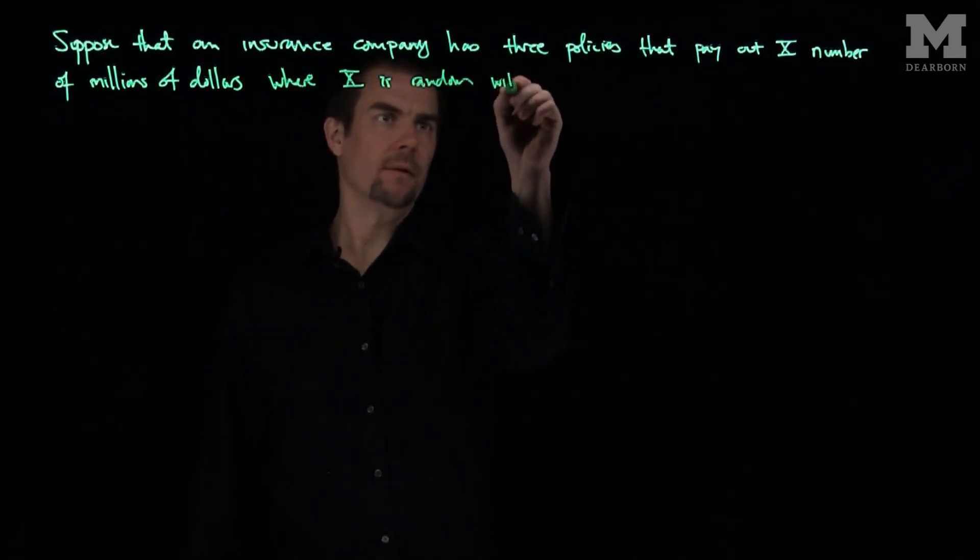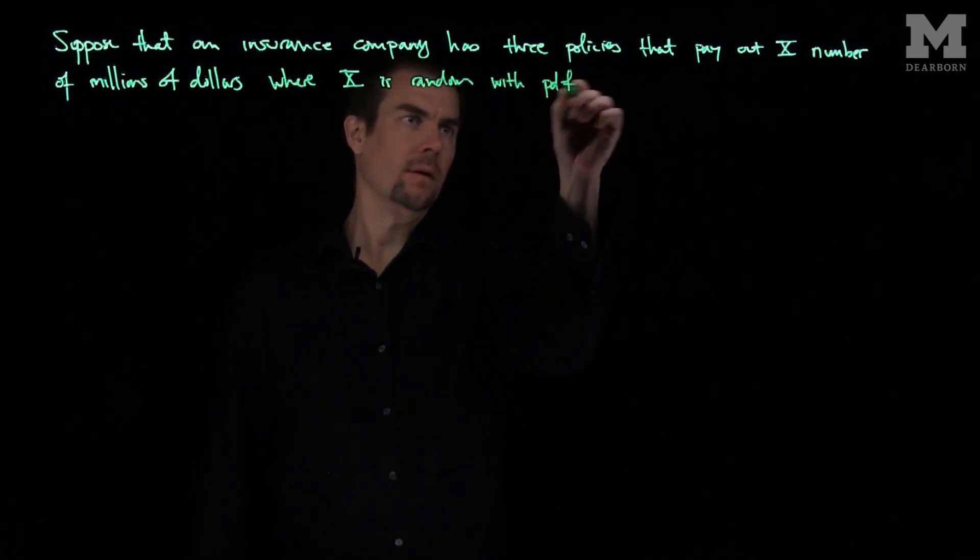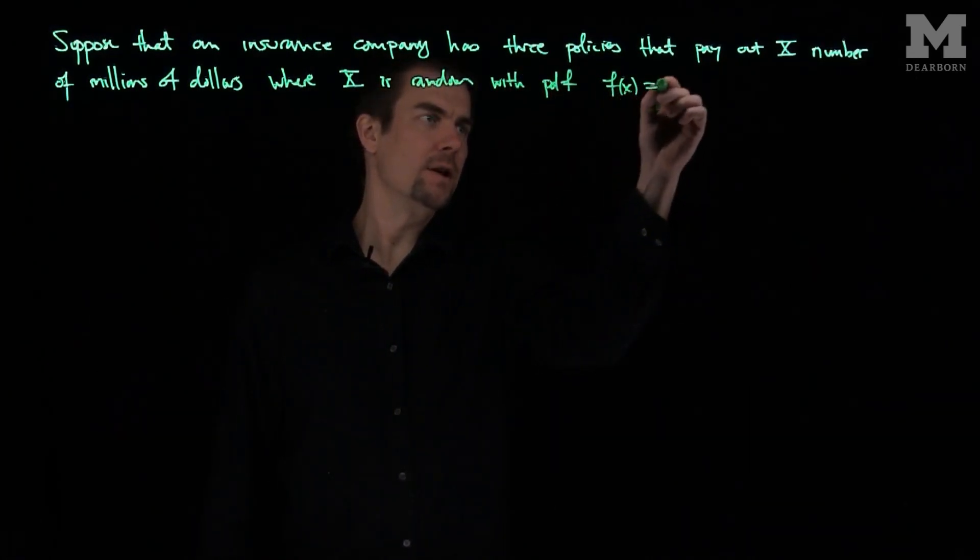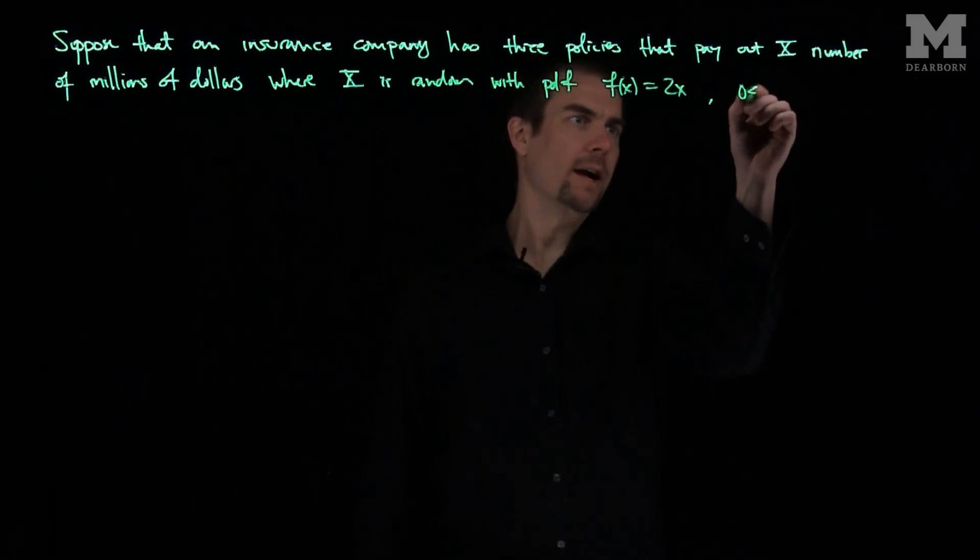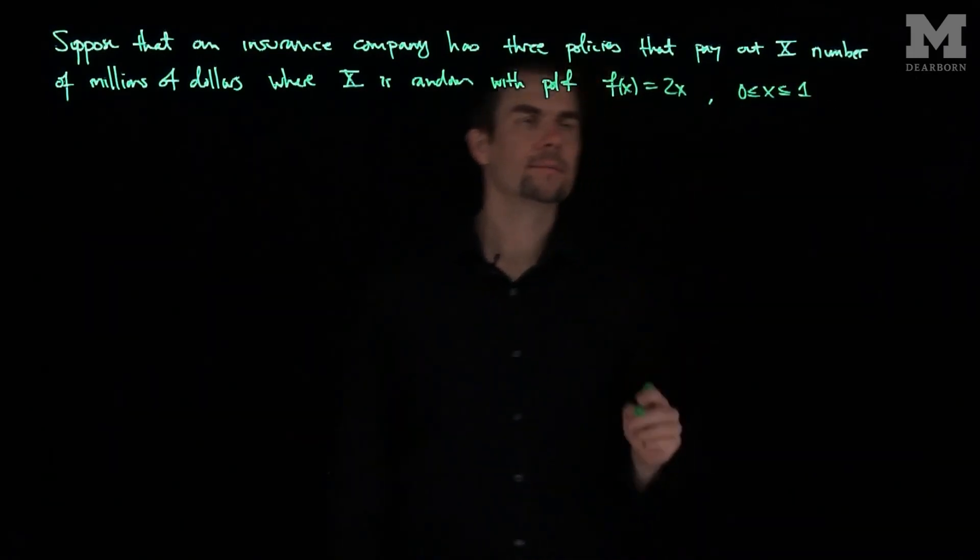The PDF is f(x) = 2x for x between 0 and 1. So that's our PDF.